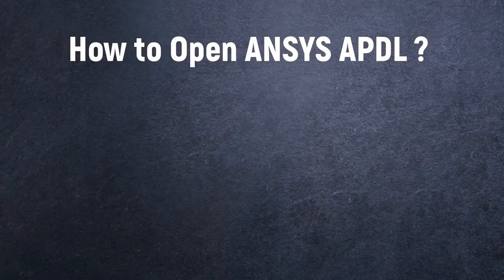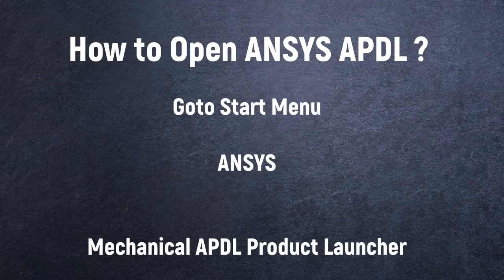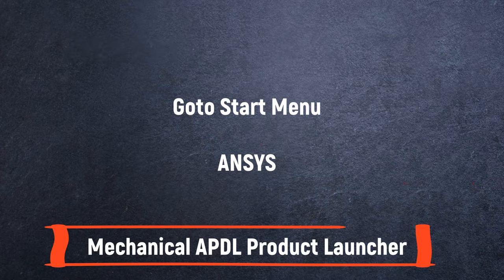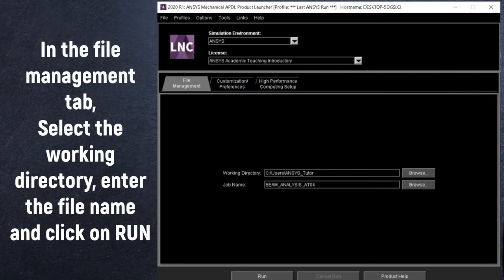To open ANSYS APDL, go to the Start menu, open ANSYS, and select the Mechanical APDL Product Launcher. In the File Management tab, select the working directory, enter the file name, and click on Run.